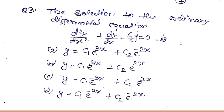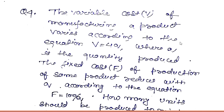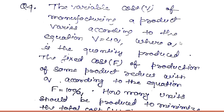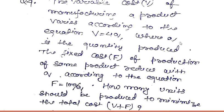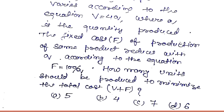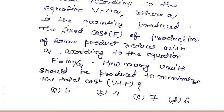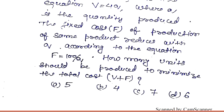Question number four: the variable cost V of manufacturing a product varies according to the equation V = 4q, where q is the quantity produced. The fixed cost F of production reduces with q according to the equation F = 100/q. How many units should be produced to minimize the total cost V plus F? Four options are given.